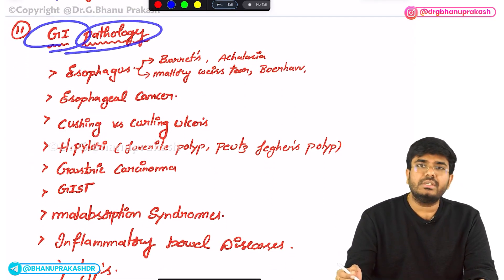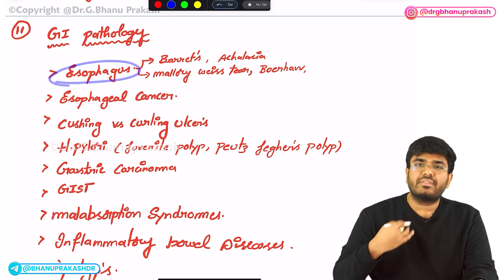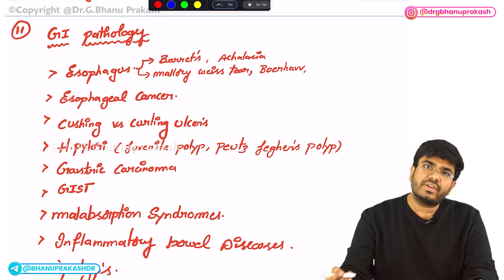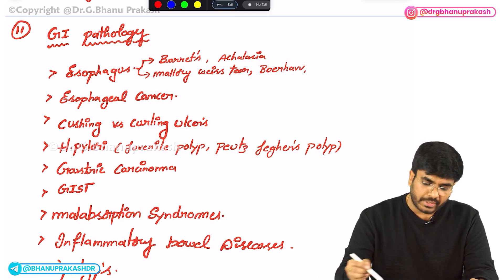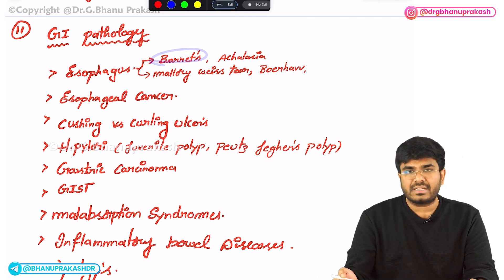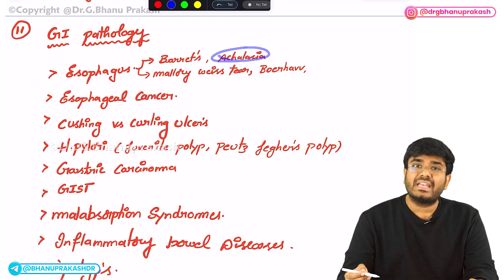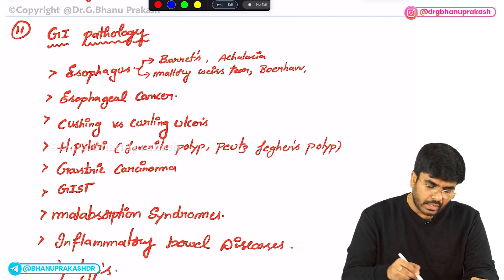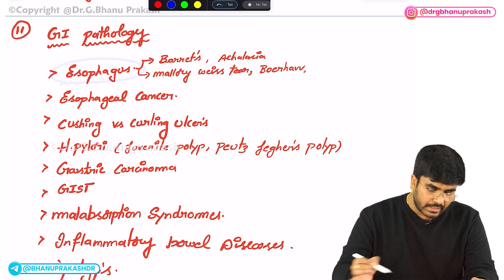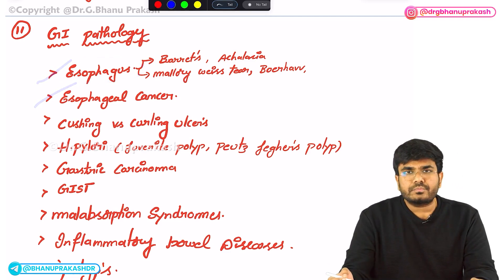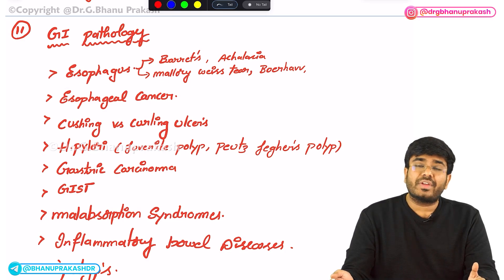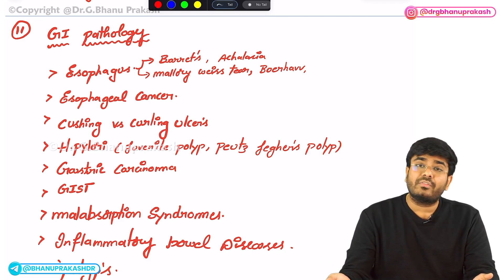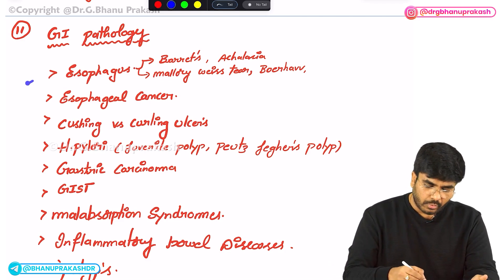In gastrointestinal pathology, starting with the esophagus — you have to know about Barrett's esophagus, where metaplasia happens due to gastroesophageal reflux, and the exact site of Barrett's esophagus. Know achalasia cardia, and the difference between Mallory-Weiss tears versus Boerhaave syndrome — all are problems of the esophagus. For esophageal cancer, know the most common type in India is squamous cell carcinoma, its site, and the site of adenocarcinoma of the esophagus.